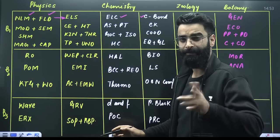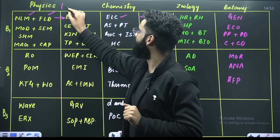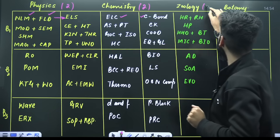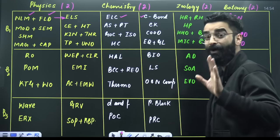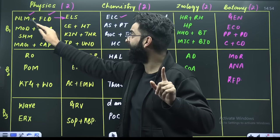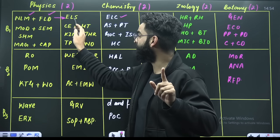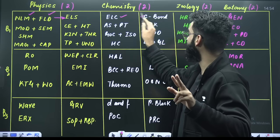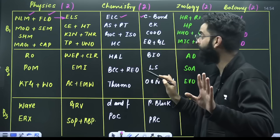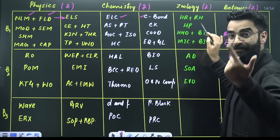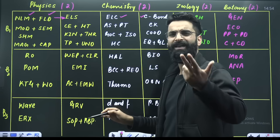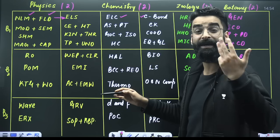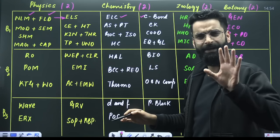So basically what exactly you have to do — let me repeat it again. For example, on a given day you are giving two hours to your physics, on a given day you will give two hours to your chemistry, two hours to your zoology and two hours to your botany, for the revision purpose. Starting with NLM and fluids, then go to electrostatics, then do the problems of these chapters. For some students it might take one day, for some students it might take two days, for some students it might take three days as well depending on your own convenience.